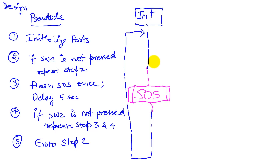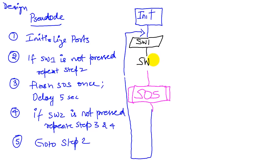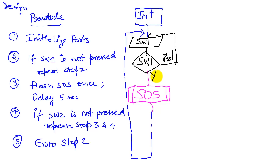It seems like we haven't accommodated the switches. So let's read switch one — we're going to read the switch and then test the switch. That's going to be a do-while loop. We will do, which is reading the switch, and then while the switch is not pressed, over and over. And if the switch is pressed, we flash the SOS.